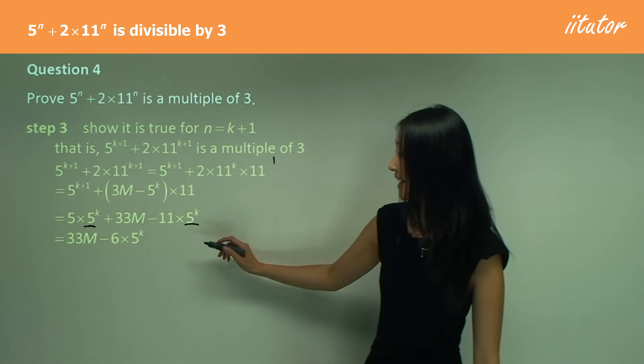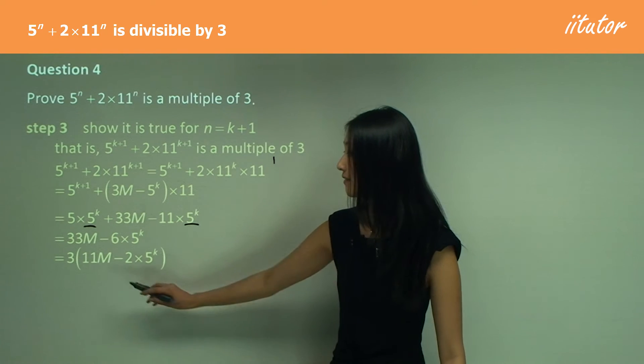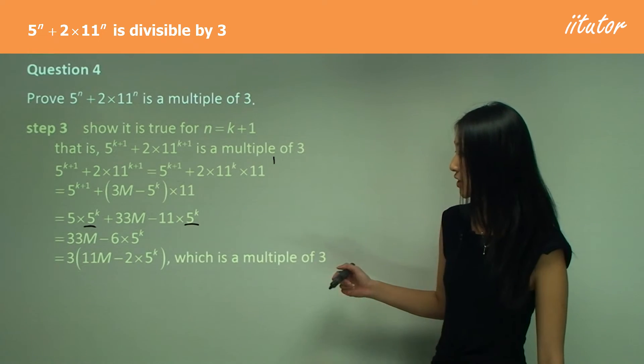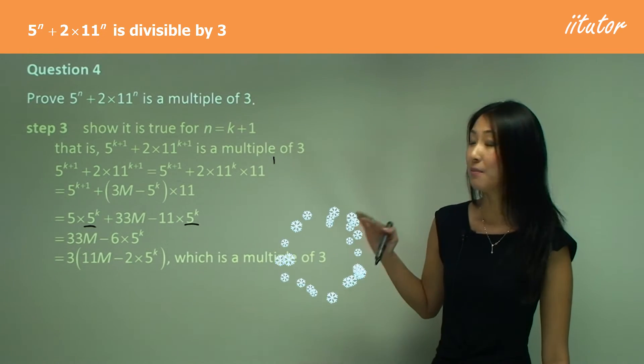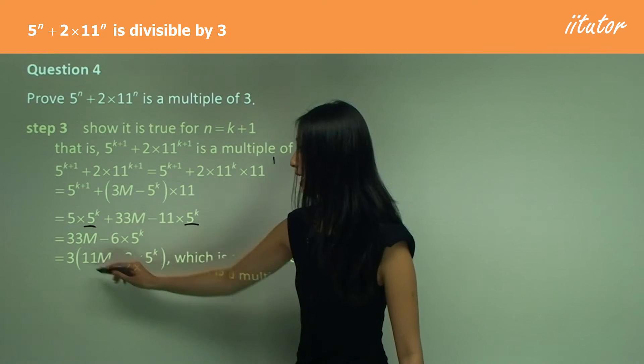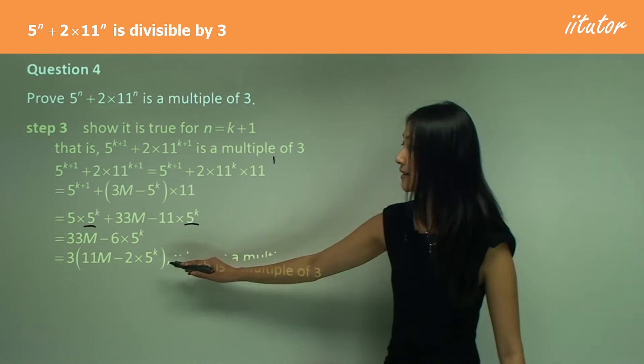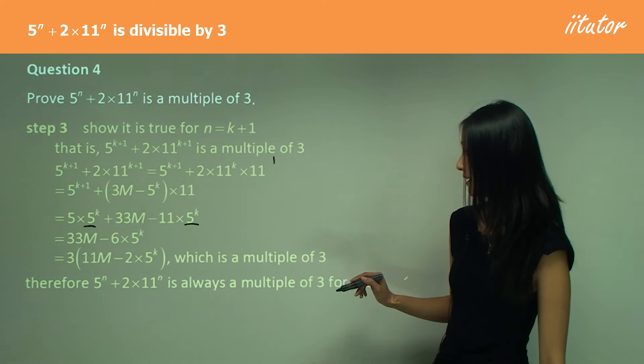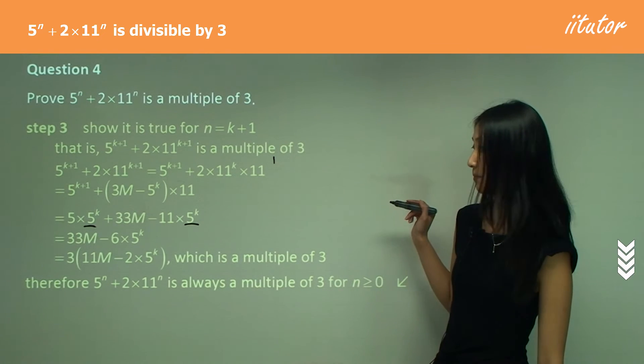And now you can see we can factorize out the three and that gives us 11m minus two times five to the power of k, which is a multiple of three. But before we do anything, let's double check that this is an integer. So I can't see any fractions or decimals. So yes, we can say therefore it is true for n equals k plus one.